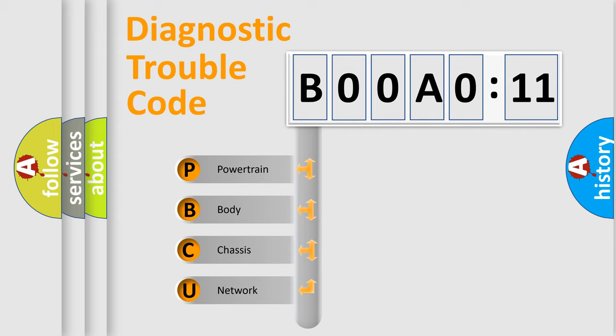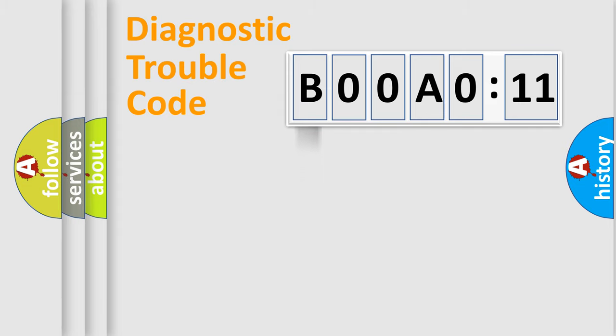We divide the electric system of automobile into four basic units: Powertrain, Body, Chassis, and Network. This distribution is defined in the first character code.